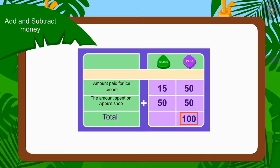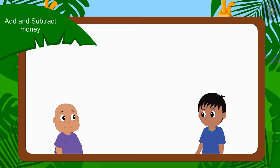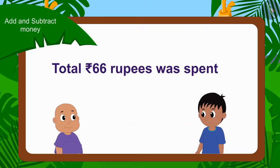Therefore, we will write 100 paise as carryover in the rupees column. And now, how much paise are left with us? Zero paise. Now can you add the total number of rupees? Well done, children — this is absolutely correct. 66 rupees in total. We have used addition to find these answers. In this way, Raju and Bablu spent a total of 66 rupees.